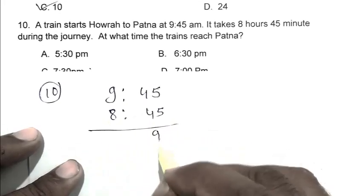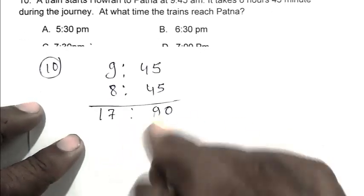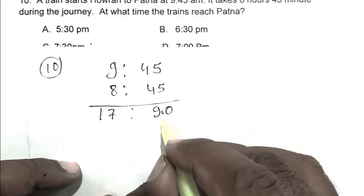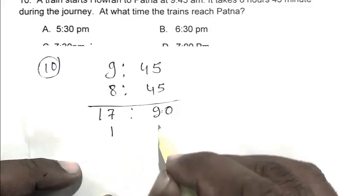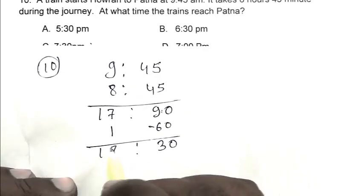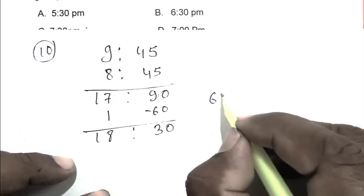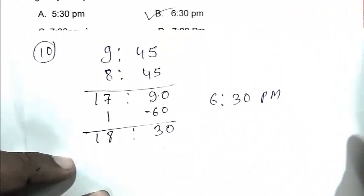Adding 8 hours 45 minutes to 9:45, we get 90 minutes and 17 hours. We convert 90 minutes into hours, which is 1 hour 30 minutes. We add 1 hour to 17, subtract 60 minutes from 90, getting 18 hours 30 minutes. That is 6:30 pm. B is the right answer.